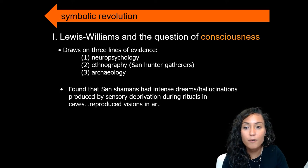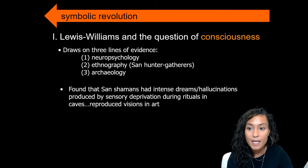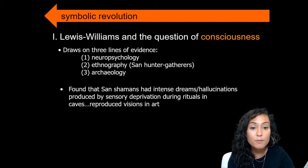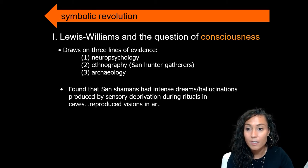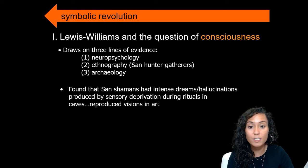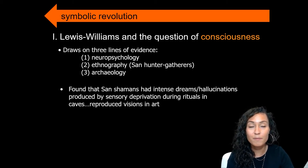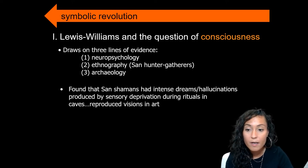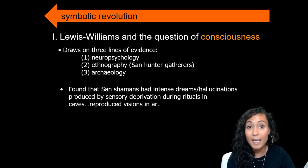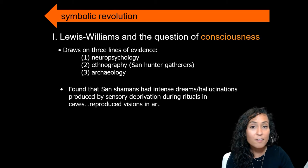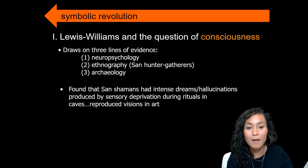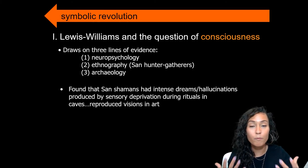In his ethnographic work with San hunter-gatherers, Lewis-Williams found that San shamans had intense dreams and hallucinations produced by sensory deprivation during rituals in caves, and that during these rituals, they reproduced their visions in art. Lewis-Williams argued that many Paleolithic images were also created as part of these kinds of rituals and the recreation of visions into depictions on cave walls. Furthermore, the act of painting and engraving images was intended to evoke supernatural animal spirits seen during visions. Individuals who communicated with the spirit world were given power by animal spirits to solve human problems or make predictions about the future. These individuals are typically what we think of as shamans.